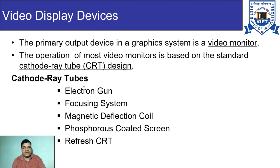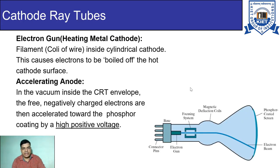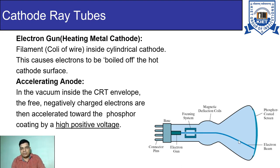In a cathode ray tube we have an electron gun, a focusing system, magnets, a magnetic deflection coil, a phosphorus-coated screen, and a refresh CRT. Here is a diagram of the cathode ray tube. You can see in this diagram we have a base connected with connector pins, then the electron gun, the focusing system, magnetic deflection coils, and here is the CRT screen, which is coated with phosphorus.